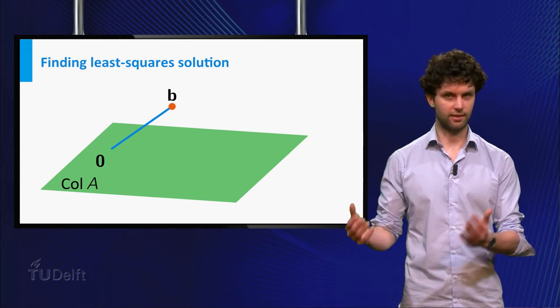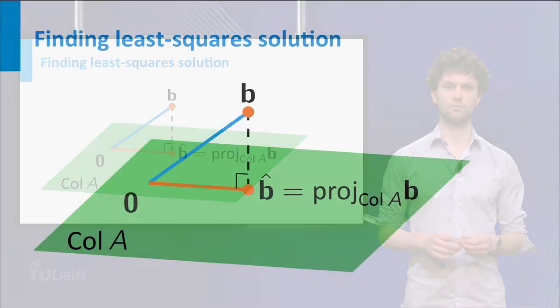Now, suppose b does not lie in the column space of A. We know that the vector in the column space of A which is nearest to b must be the orthogonal projection of b onto the column space of A. Let's denote that vector by b-hat.